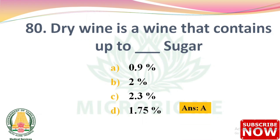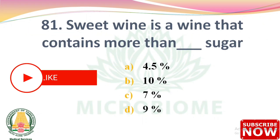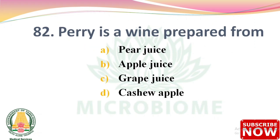Next question: perry is a wine that contains more than dash sugar — options: 4.5%, 10%, 7%, 9%. The right answer is Option A: 4.5%.